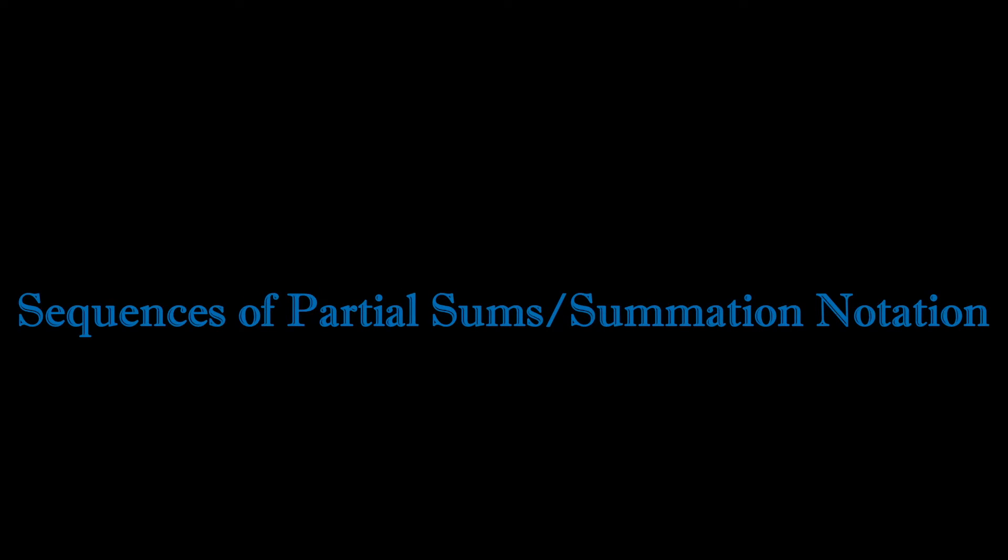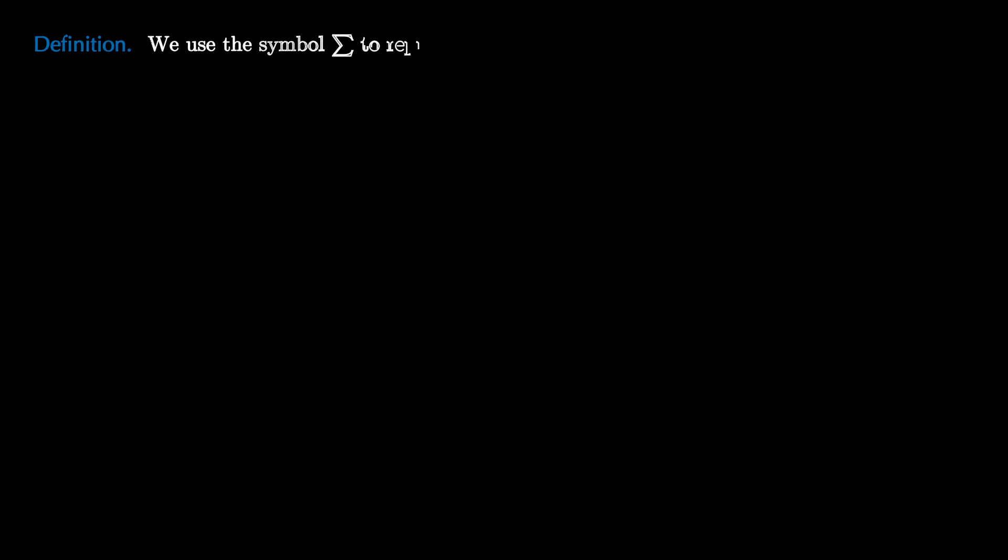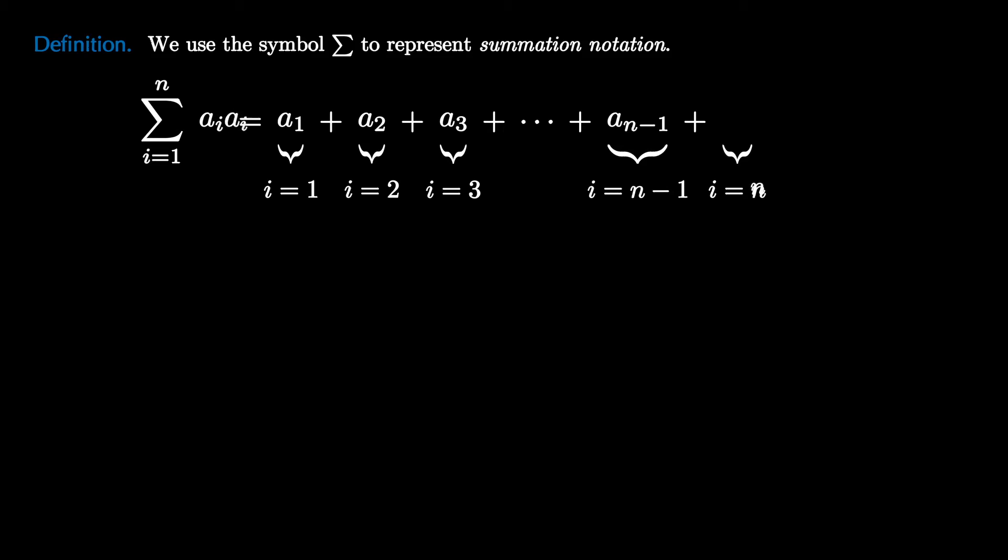To deal with sequences of partial sums, we'll introduce what is known as summation notation. We use the symbol Σ to represent summation notation. So this symbol indicates that what we want to do is that the sigma means add up a bunch of terms, and the i equals 1 to n means we do this in stages. When i is 1, we add a₁. When i is 2, we add a₂. When i is 3, we add a₃. And we keep going so that the second to last term is when i equals n minus 1, where we add aₙ₋₁, and the final term when i equals n is when we add aₙ. This is known as summation notation, and we read it as the sum of aᵢ, where i ranges from 1 to n.